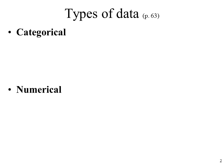As mentioned on page 63 of the Basic Epidemiology textbook, there are two different main types of data: categorical and numerical. As the name suggests, categorical data is in categories, and numerical data is numbers.